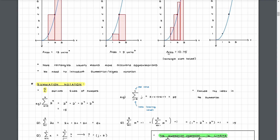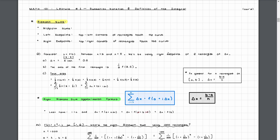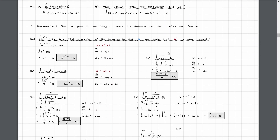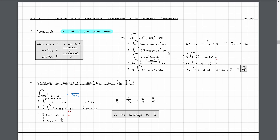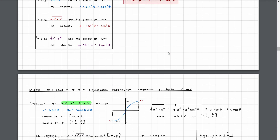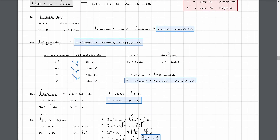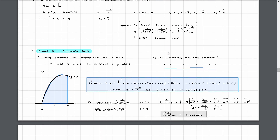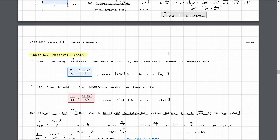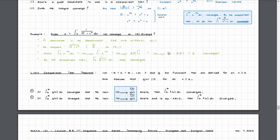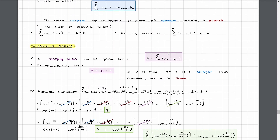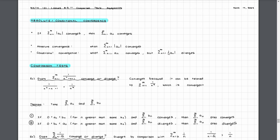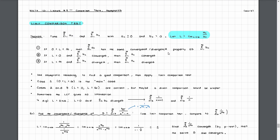MATH 101 is all about integral calculus, which is the branch of math concerned with summations and the area under a curve. It starts off by discussing Riemann sums and approximating the area under a curve, which transitions into the definite integral, anti-derivatives, and the Fundamental Theorem of Calculus. You'll then learn more integration techniques and how to apply integration to differential equations.